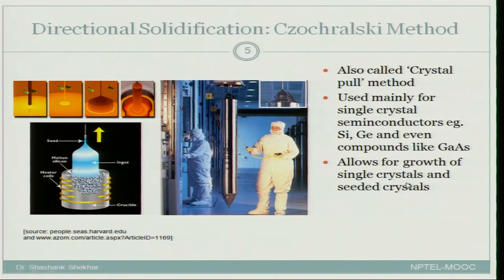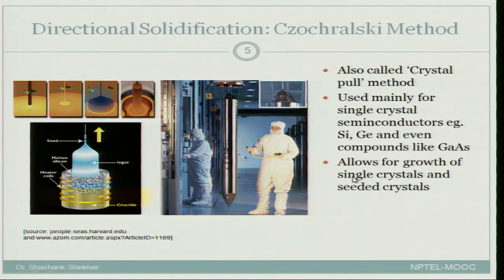The Czochralski method is widely used for electronic materials — semiconductors such as silicon, germanium, and even compound materials like gallium arsenide, though the latter is more difficult. It allows for growth of single crystals and seeded crystals in both directional solidification techniques.